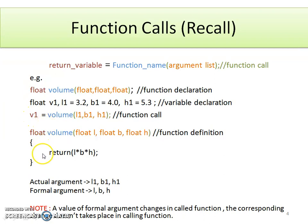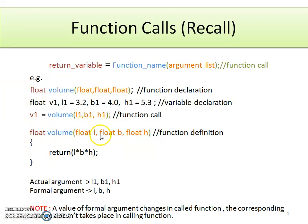The return value is stored in variable v1. This is the definition of function volume, where we perform the multiplication of l, b, and h. Here l, b, and h are the formal arguments declared in the function definition, while l1, b1, and h1 are the actual arguments passed from the calling function. The key note is: if the value of a formal argument changes in the called function, the corresponding change does not take place in the calling function.